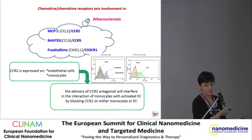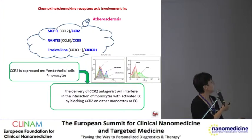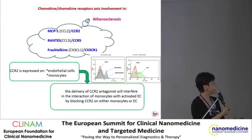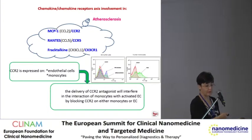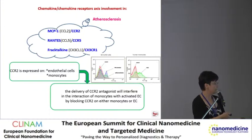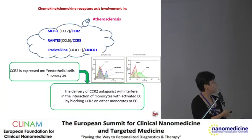In atherosclerosis, three main chemokine and chemokine receptor axes are involved: MCP-1/CCR2, CCR5/CCR5, and fractalkine/CX3CR1. CCR2 is expressed on the surface of endothelial cells and also on monocytes. Delivery of a CCR2 antagonist will interfere in the interaction of monocytes with activated endothelial cells by blocking CCR2 on both monocytes and endothelial cells.